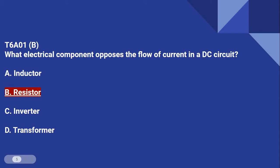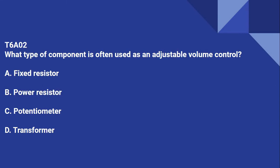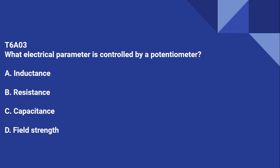T6A01: What electrical component opposes the flow of current in a DC circuit? That is B, resistor. T6A02: What type of component is often used as an adjustable volume control? That is a potentiometer. T6A03: What electrical parameter is controlled by a potentiometer? That is resistance.